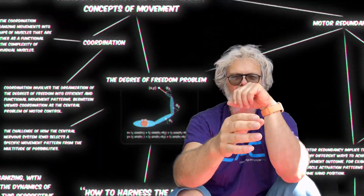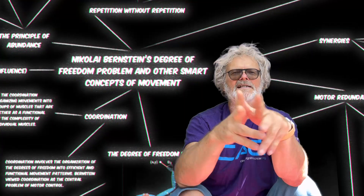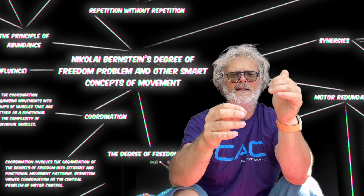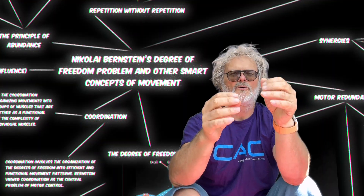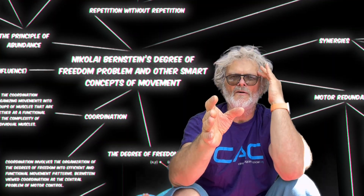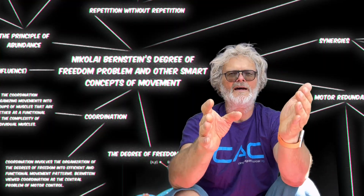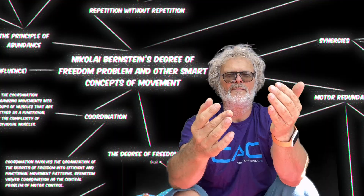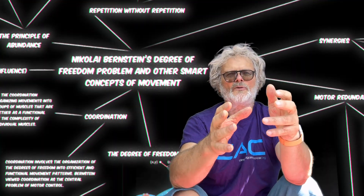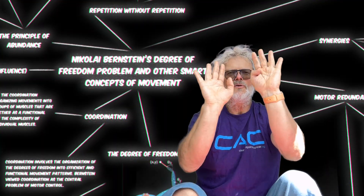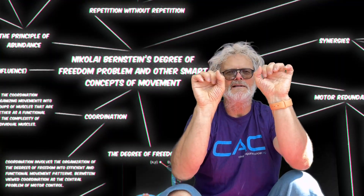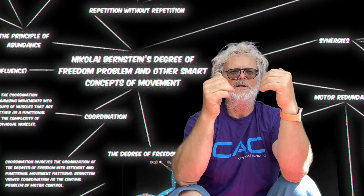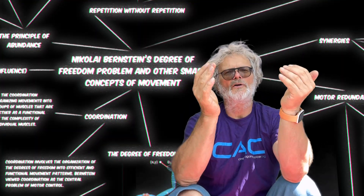Considering the degrees of freedom problem is pure coaching gold. Freezing degrees of freedom in motor learning refers to a strategy used by the central nervous system to simplify the control of movements when learning a new motor skill. Degrees of freedom in this context refers to the numerous independent variables — such as joint angles and muscle activations — that need to be controlled to produce coordinated movement.